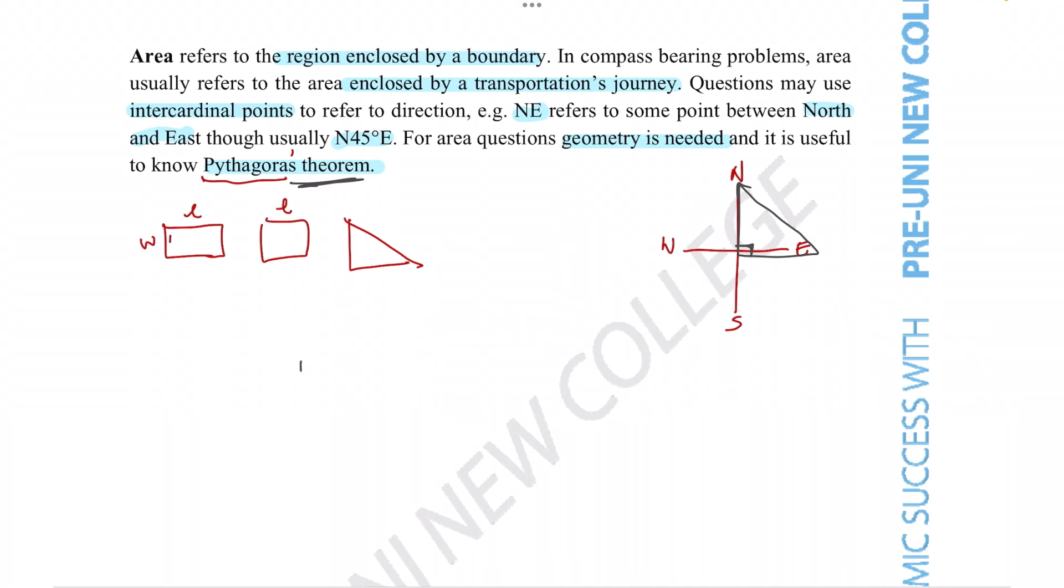So Pythagoras' theorem works for any triangle with a right angle in it. So what the Pythagoras' theorem says is we can give each of the three sides of the triangle a name, just so we can label each side easier. So let's give this A, B, and C.